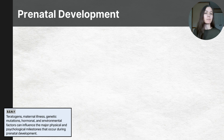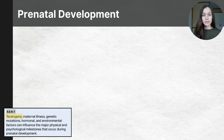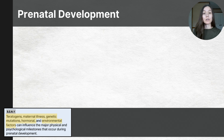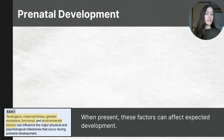The College Board names several factors that can influence development in the womb. They are teratogens, maternal illness or when the mother becomes sick, genetic mutations, and hormonal and environmental factors. When present, any of these factors can affect normal and expected development.